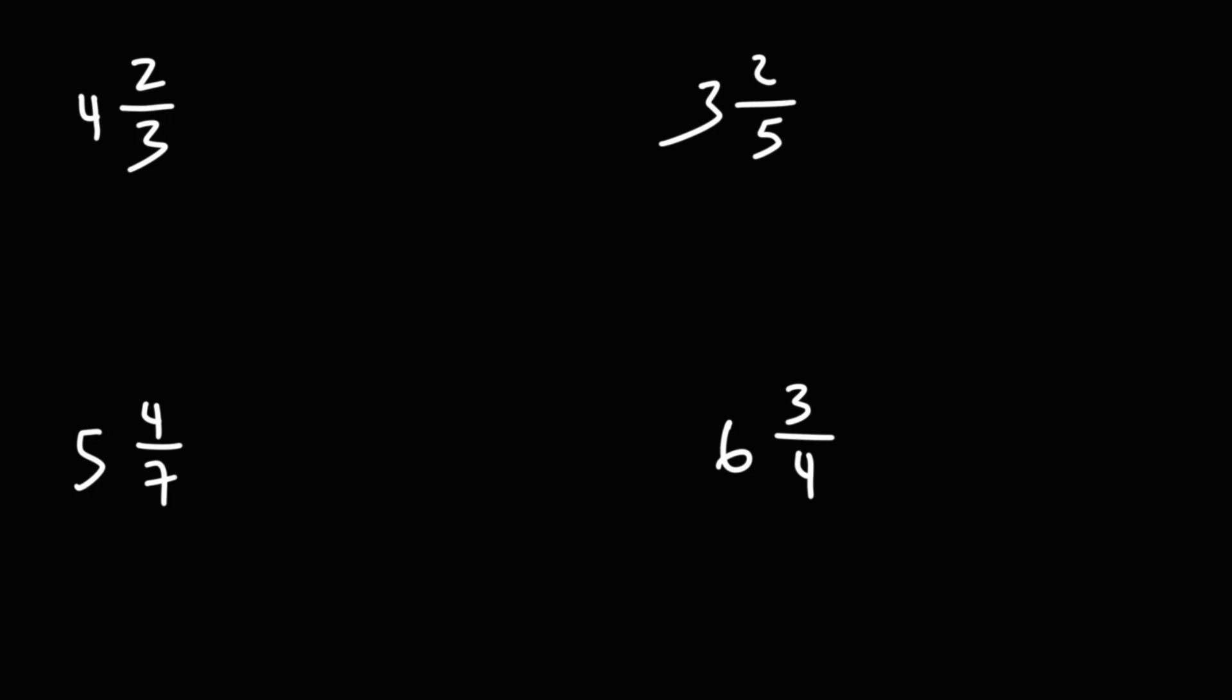In today's lesson, we're going to talk about how to convert a mixed number to an improper fraction. So first, you want to rewrite the denominator, which is 3.